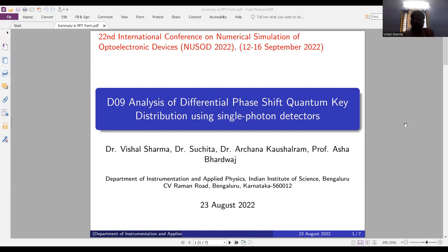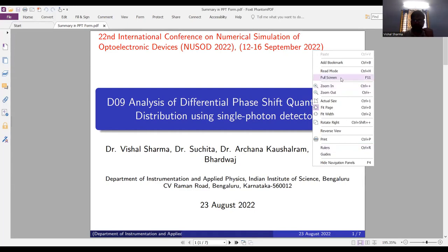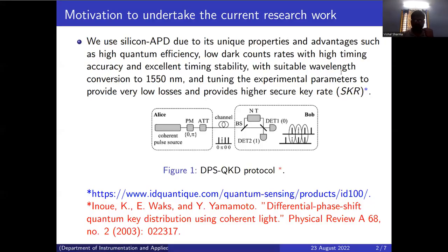I'm going to present my work that is accepted under the detector category. The title of the research work is Analysis of Differential Phase Quantum Key Distribution in single photon detection. In the present work, we have taken silicon APD and germanium gallium arsenide APD for the DPS QKD protocol, Differential Phase Quantum Key Distribution protocol.